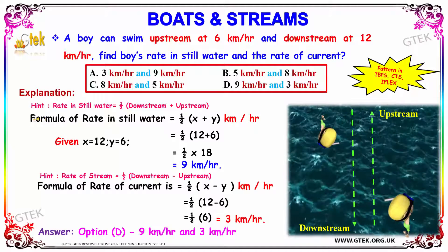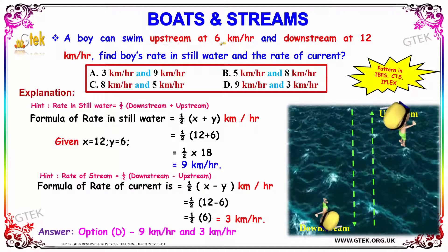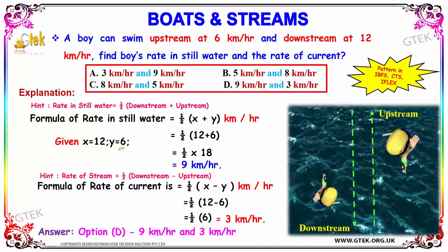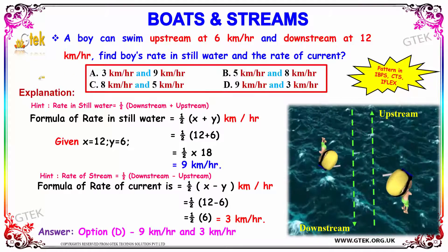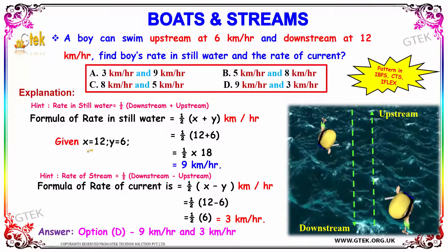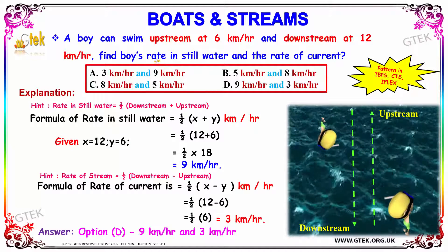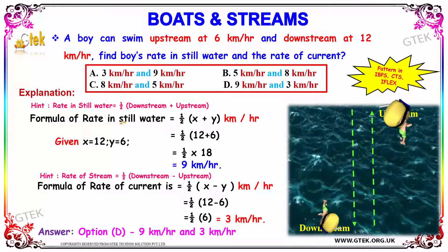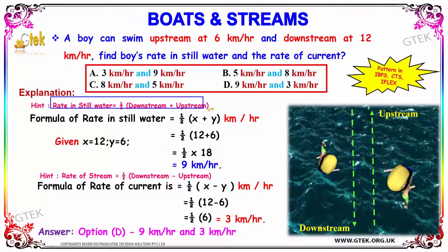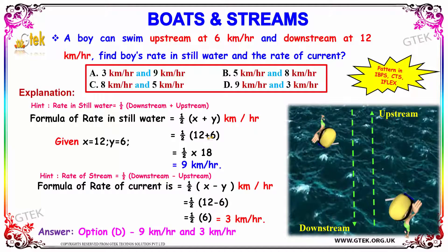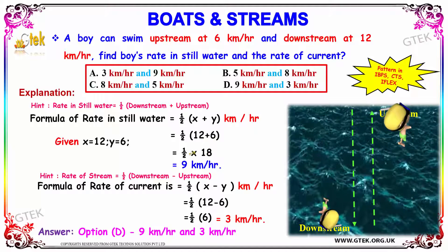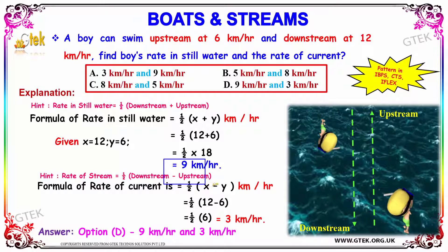It is given that the upstream speed is 6 kilometers per hour, that is y equals 6, and downstream is 12 kilometers per hour, that is x equals 12. To find the rate of the boat in still water, we use: still water speed equals half into (downstream plus upstream), that is half into (x plus y). Substituting: half into (12 plus 6) equals half into 18, which gives 9 kilometers per hour. So the rate in still water is 9 kilometers per hour.